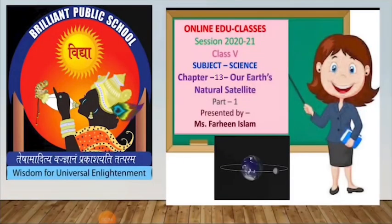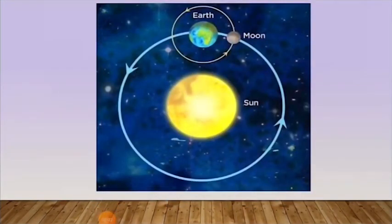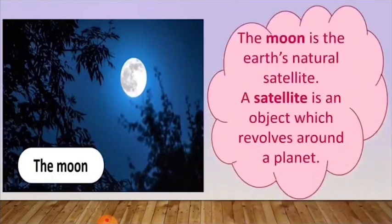Hello students, welcome to online edu class of science. Today we will start a new chapter, Chapter Number 13: Our Earth's Natural Satellite Part 1. Children, we all know that our Earth is the only planet where life exists. As it goes around the sun in revolution, similarly the moon goes around the Earth.